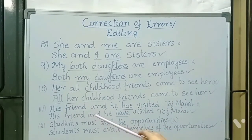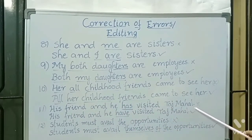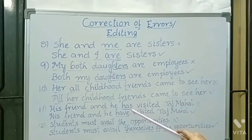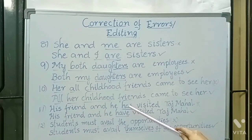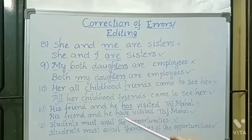He is a friend and he has visited Taj Mahal — 'has' is wrong here. 'Has' is used for singular, but here 'he and he' means two people, so it is plural. 'Have' is the correct form.